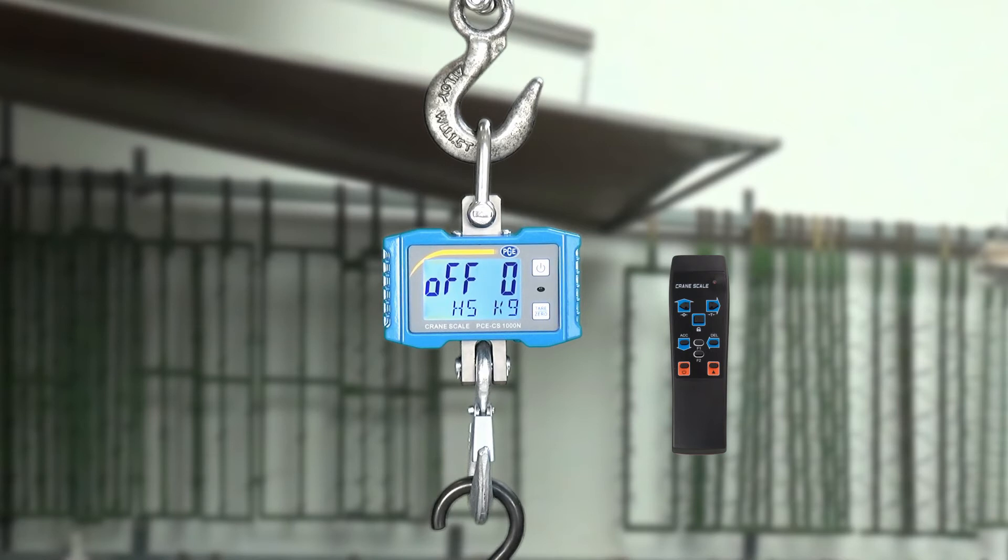I can though using the arrow keys on the remote set at 5 minutes, 10 minutes, quarter of an hour, 30 minutes, 60 minutes. Means that the usage time, the crane scale turns itself off to protect the batteries.